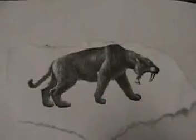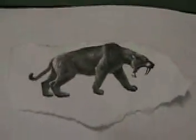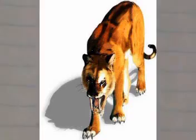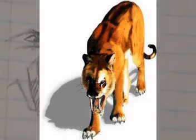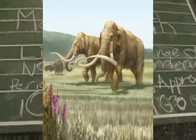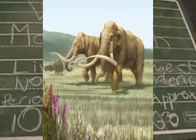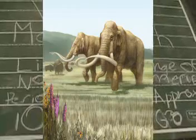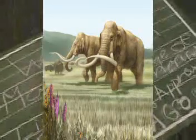My animal is a saber-toothed tiger. It's 2 meters long. It's a mammal. Its teeth are 15 centimeters. It's found in Argentina and California. It's a carnivore and it had huge jaws that included 7-inch canines. It lived in the Quaternary Era. It was also called the Woolly Mammoth. Its range was spanning through North and South America and it died 10,000 years ago.